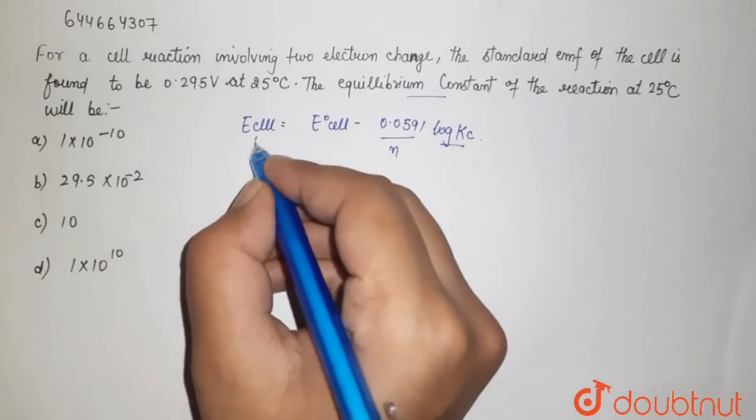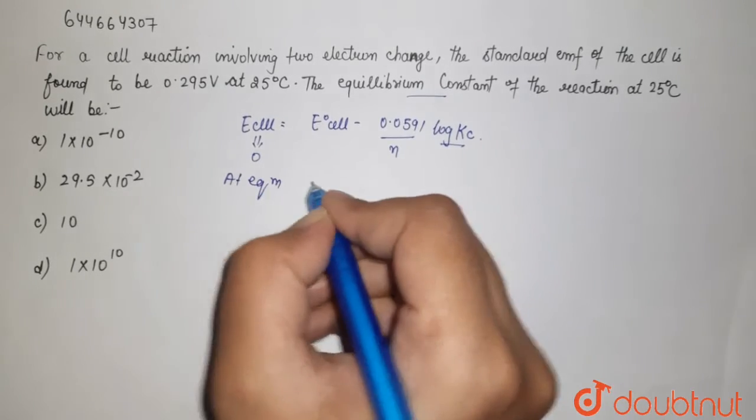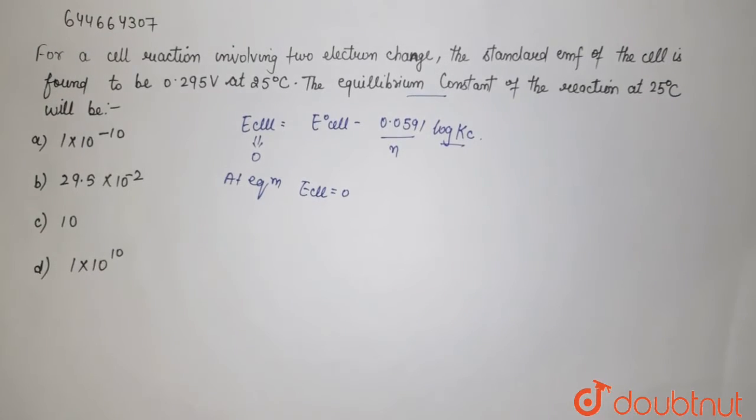At equilibrium, your E cell becomes 0. At your equilibrium, your E cell which is equal to 0.